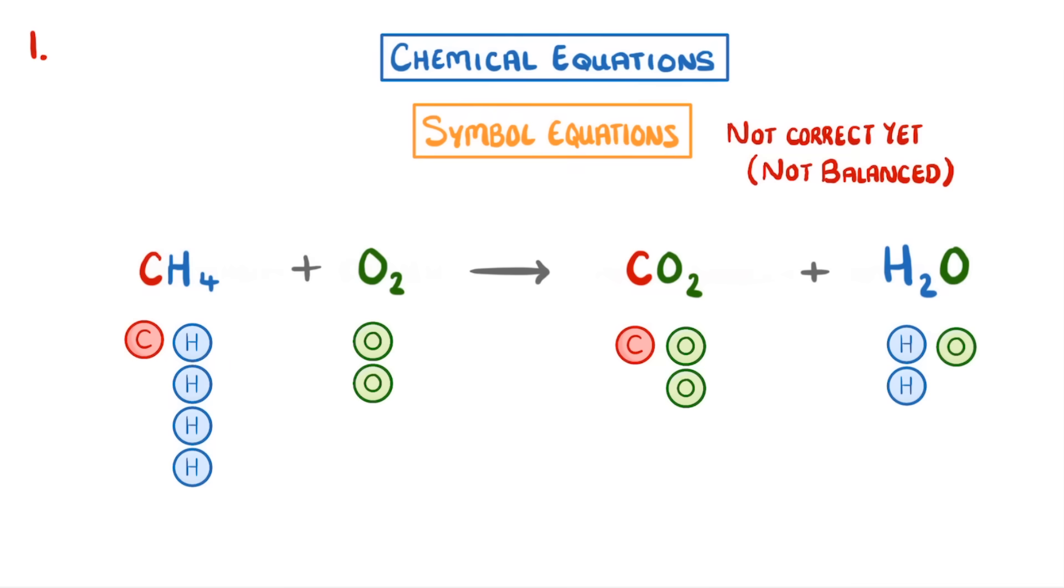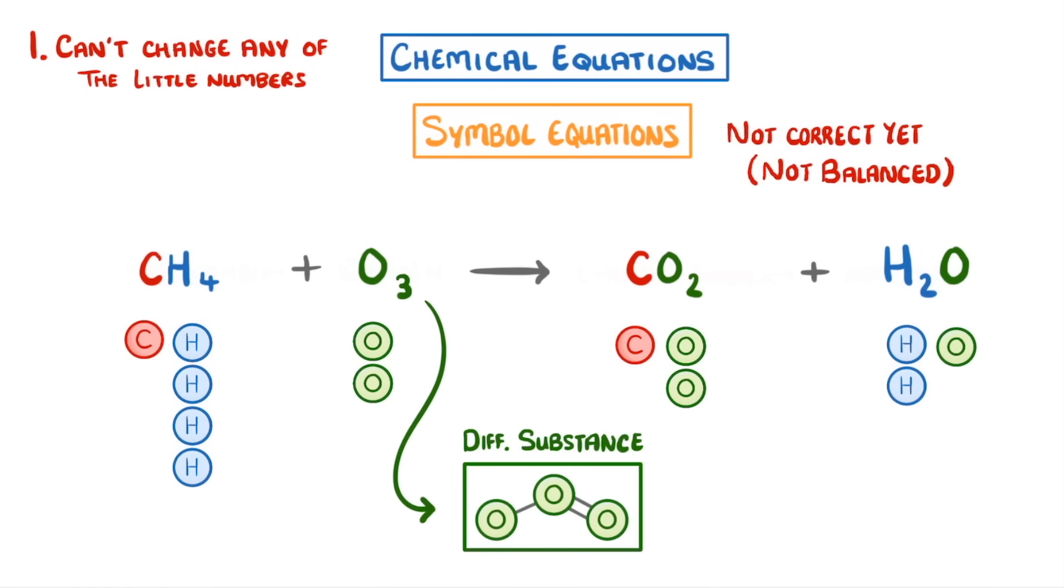The first rule of balancing equations is that we can't change any of the little numbers. This is because doing so would mean that we were changing the actual type of chemicals in our equation. For example, we couldn't change our O2 to an O3, because O3 is an entirely different substance, which isn't oxygen.